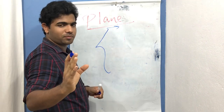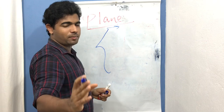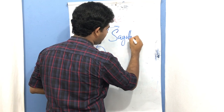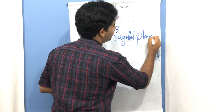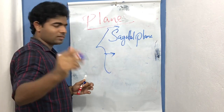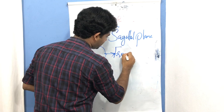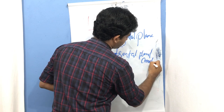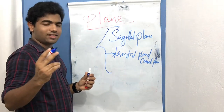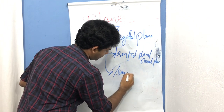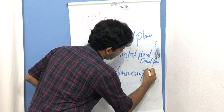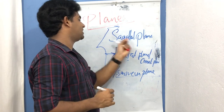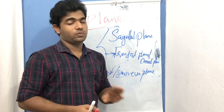The first plane is the sagittal plane. The second is the frontal plane, also called the coronal plane. And the last one is the transverse plane. In the human body, you just have these three planes: sagittal, frontal, and transverse. Remember, we are going to study motion with the body in its anatomical position. If you don't know what anatomical position is, refer back and then return.